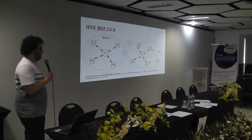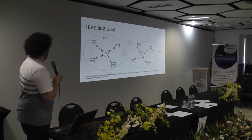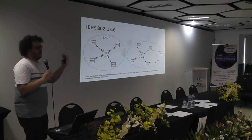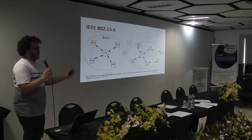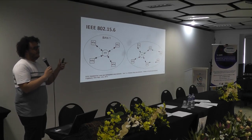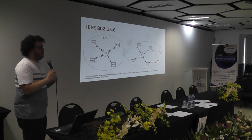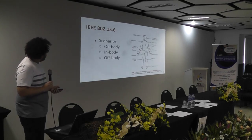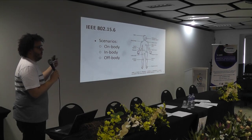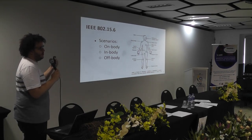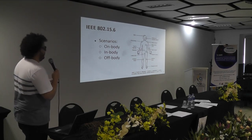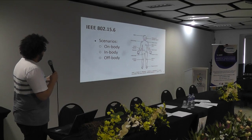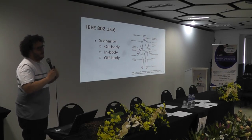Here you can see the topology of WBANs. Initially proposed as a single hub star network, but after initial tests, just a few meters could be harmful for the communication, so they also put an extended topology with two stars. Since you have implantable, wearable, and human body surrounding devices, you have different scenarios: on-body for wearables, in-body for implantable devices, and off-body for devices not on the human body.